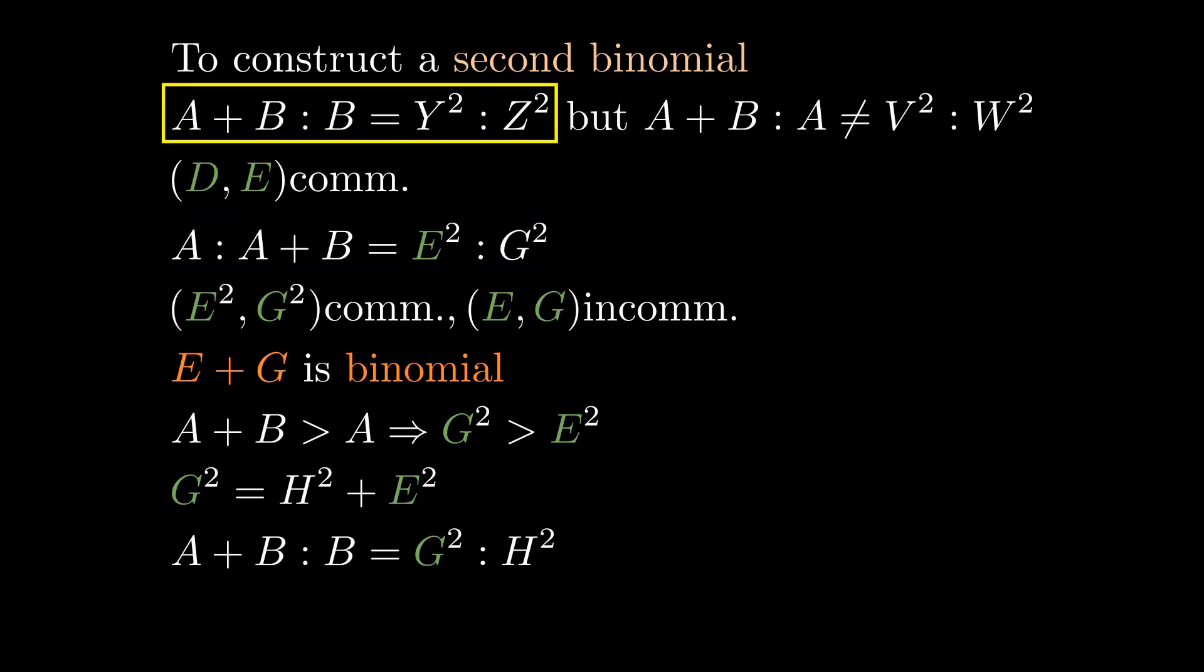A plus B to B is a ratio of square numbers, so G squared to H squared is as well. So G and H are commensurable.